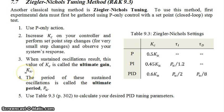Then when you look at those sustained oscillations, you measure the period of those sustained oscillations. That period is going to be called Pu, or the ultimate period. Once you have Ku and Pu, you can go to this table, which is table 9.3 in the book, also on page 302, and you can calculate your desired PID tuning parameters.